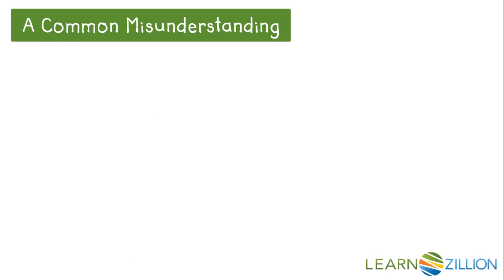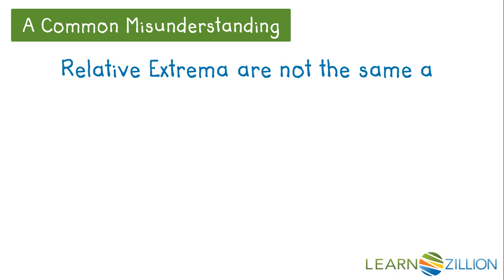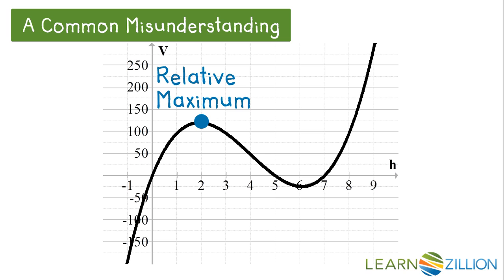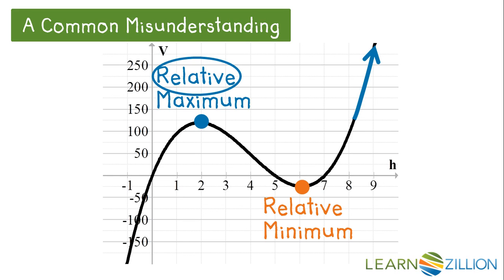A common misunderstanding: relative extrema are not the same as absolute extrema. This graph has a relative maximum. While there are points higher than this point, there is no absolute maximum. We consider this point to be the relative maximum because it is the highest of the points closest to it. This graph also has a relative minimum. While there are points lower than this point, there is no absolute minimum. We consider this point to be the relative minimum because it is the lowest of the points closest to it.